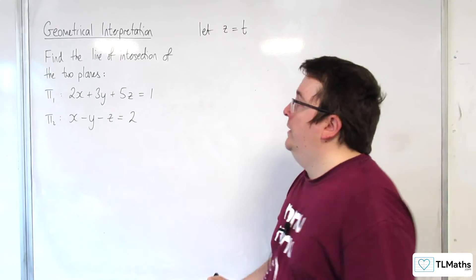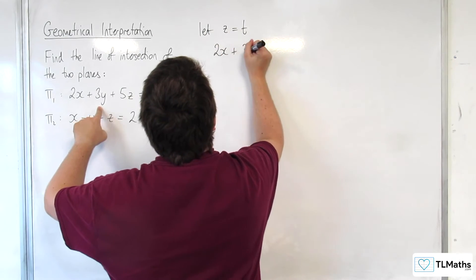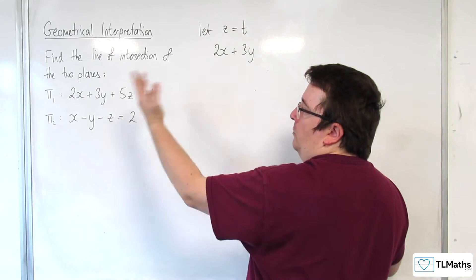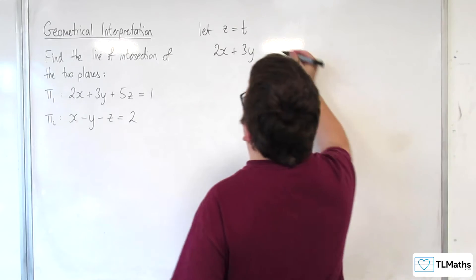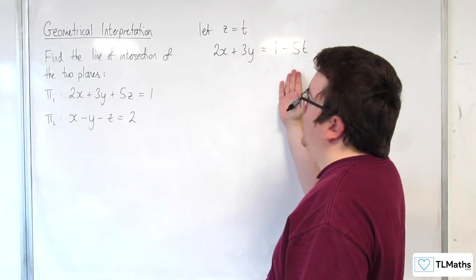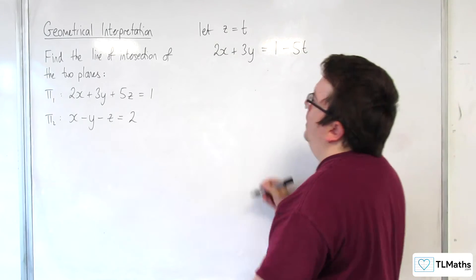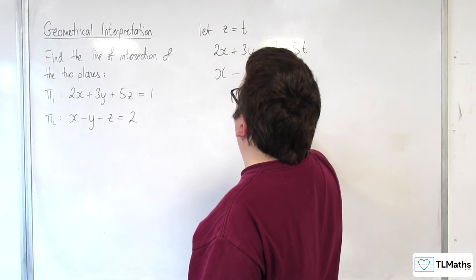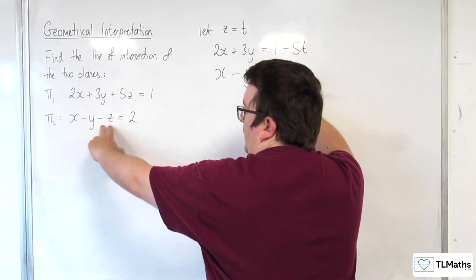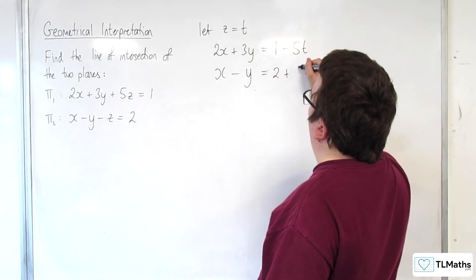So I'm going to let z equal t. What happens is that we get 2x plus 3y plus 5t equals 1, and I'm going to subtract 5t from both sides so my first equation becomes that. Then for the second one, x minus y minus t equals 2, and I'm going to add t to both sides to get 2 plus t.